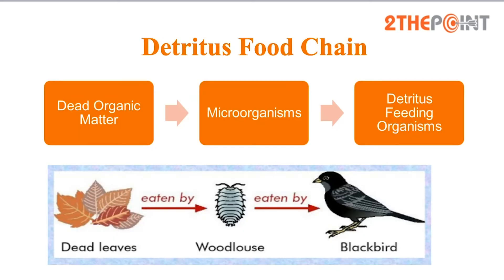The detritus food chain starts from dead organic matter of decaying animals and plant bodies, to microorganisms, then to detritus feeding organisms called detritivores or decomposers, and then to other predators. The key difference between a grazing food chain and a detritus food chain is the source of energy for the first level consumers.